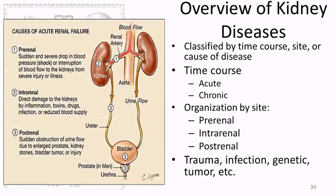We've talked about the anatomy, physiology, and symptoms. Now let's talk about the actual diseases. When we look at diseases, you can describe them as acute and chronic — does it set in within days or does it take years? And as far as the site of damage: is it pre-renal, intra-renal, or post-renal — something happening afterwards like the ureters or the bladder?